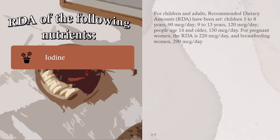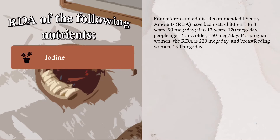Iodine: RDAs have been set — children 1 to 8 years: 19 micrograms per day; 9 to 13 years: 120 micrograms per day; people age 14 and older: 150 micrograms per day; pregnant women: 220 micrograms per day; breastfeeding women: 290 micrograms per day.